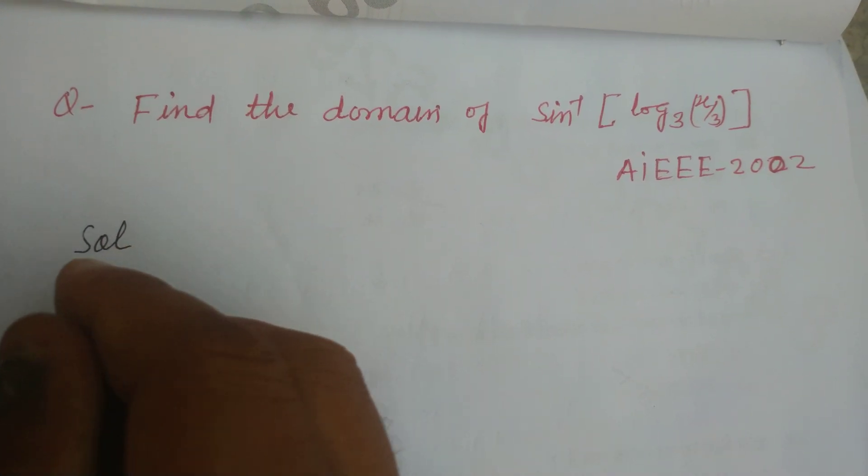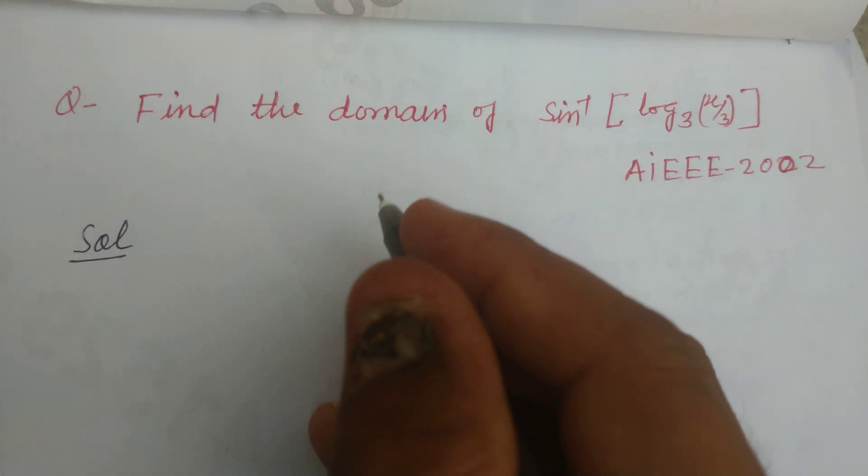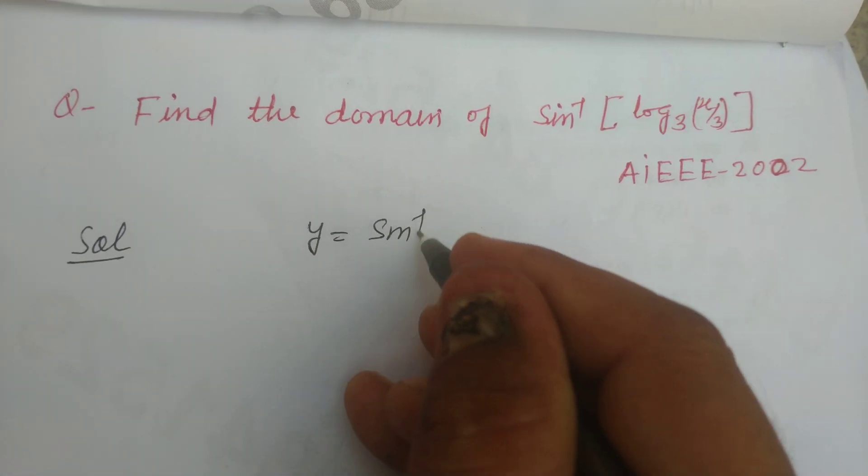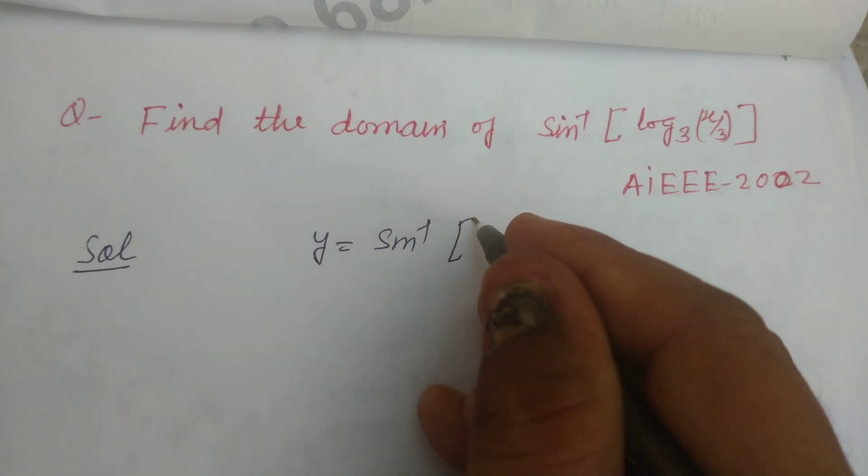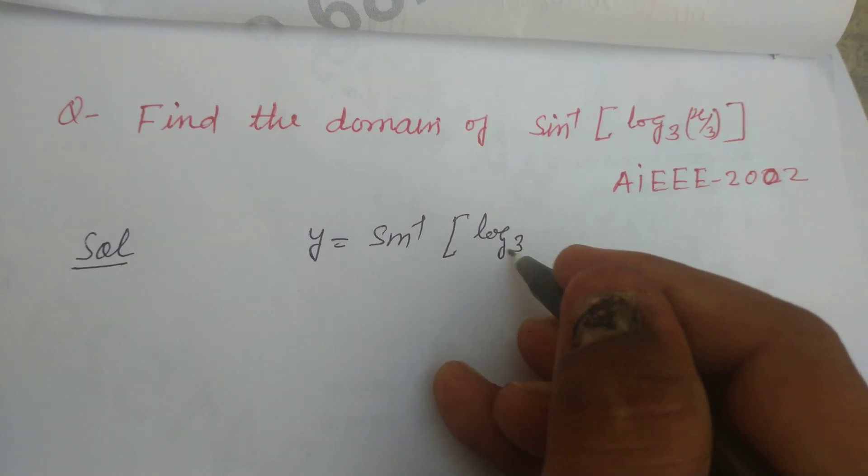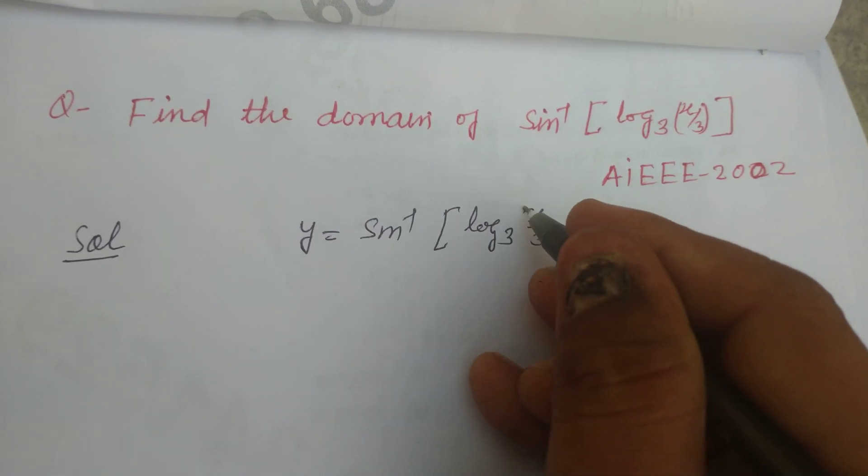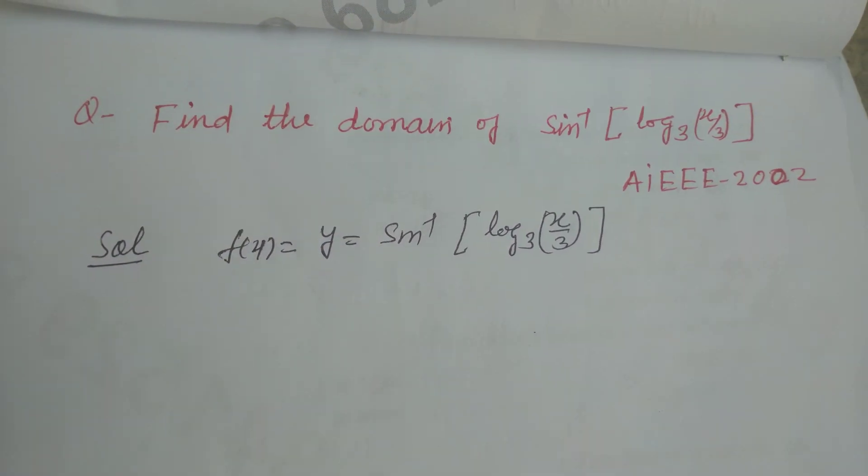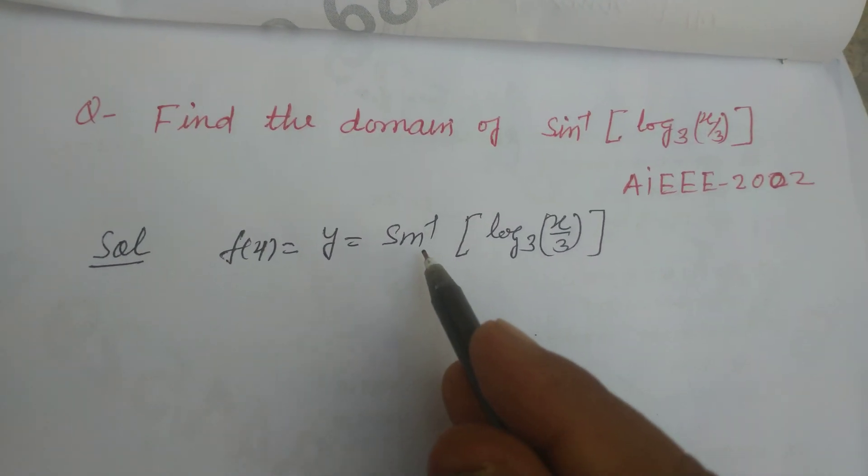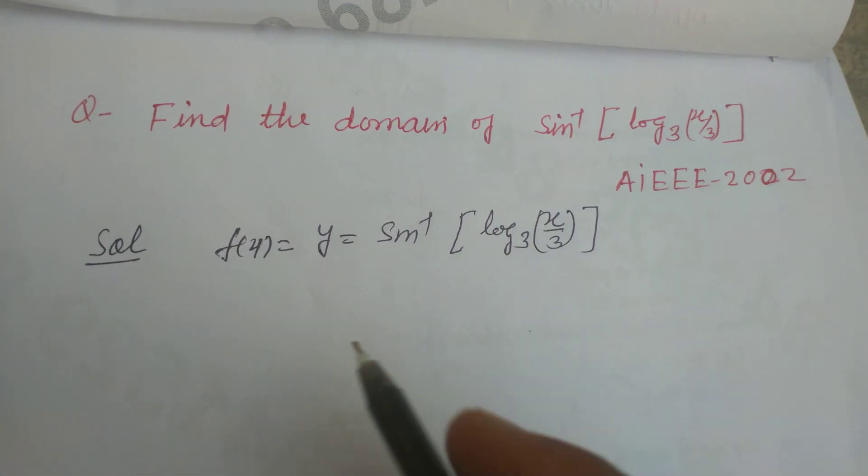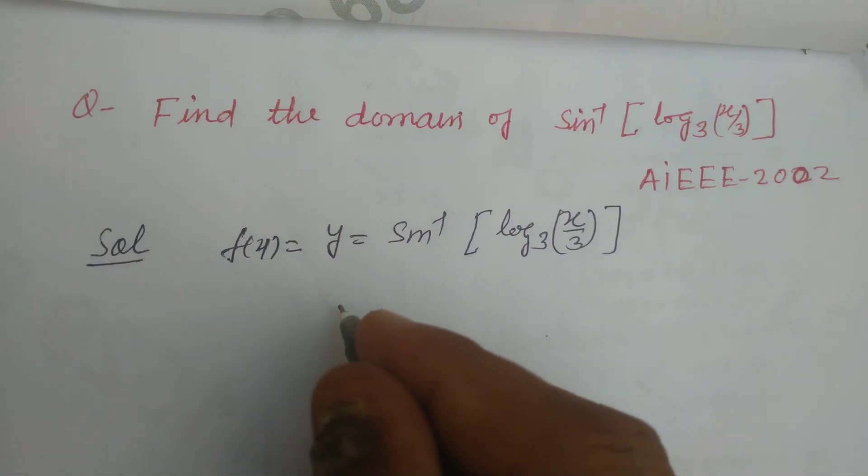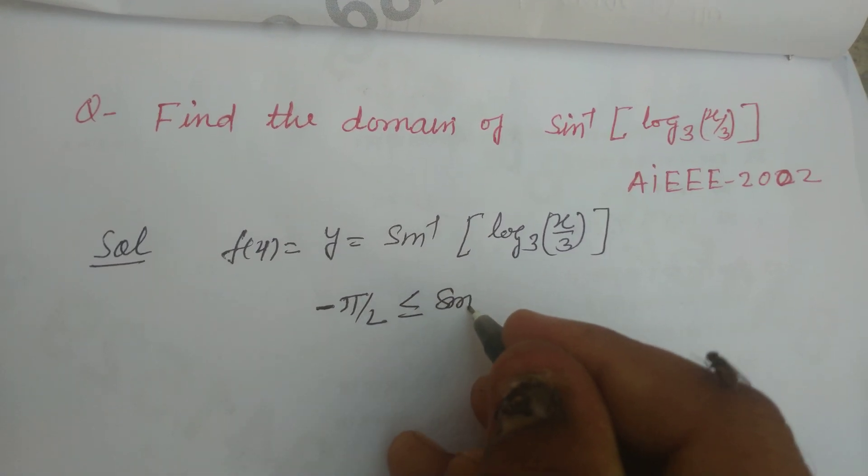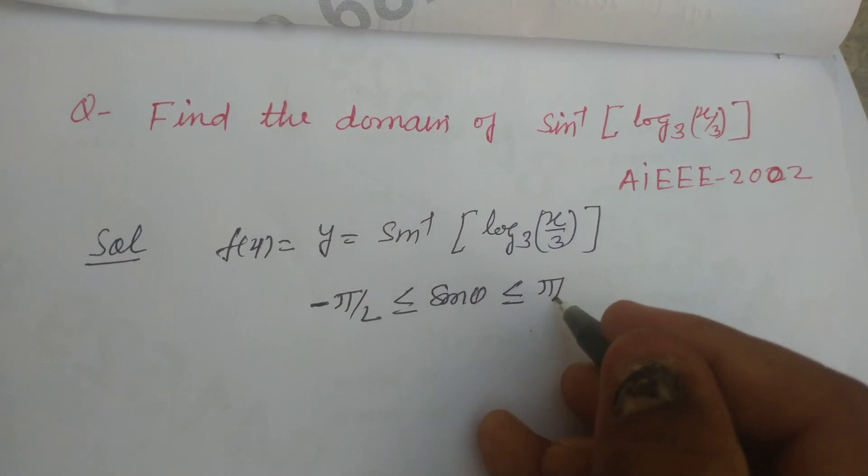Now we solve this question. Let f of x equal to sin inverse of log base 3 of x by 3. You know the value of sin theta lies between minus pi by 2 to pi by 2.